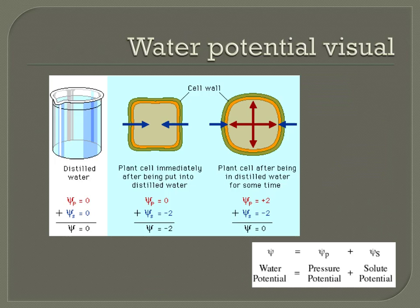Water will continue to move into the plant cell until the water potentials are the same. What would happen if you put a plant cell into a beaker of distilled water is that the central vacuole would fill with water more and more. Eventually it would be so full that it would create significant pressure on the inside of the cell pushing outwards — this is called turgor pressure, caused by the vacuole filling up. When the pressure potential increases to the point that it equals the value of the solute potential, the cell reaches equilibrium, meaning water moves in and out at the same rate. This is one reason central vacuoles are so important to plants: they help maintain homeostasis by regulating water levels.